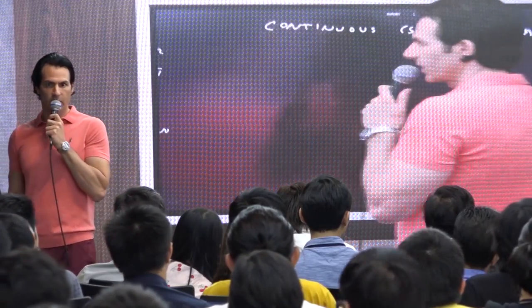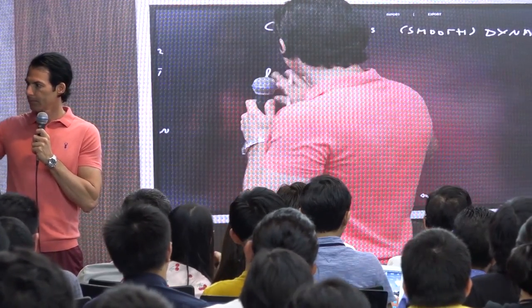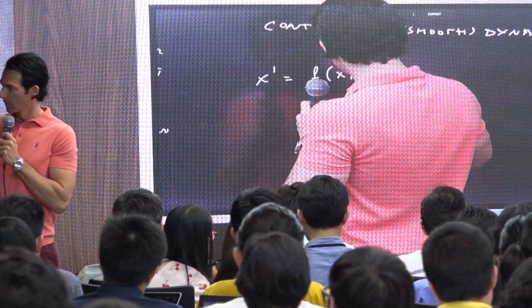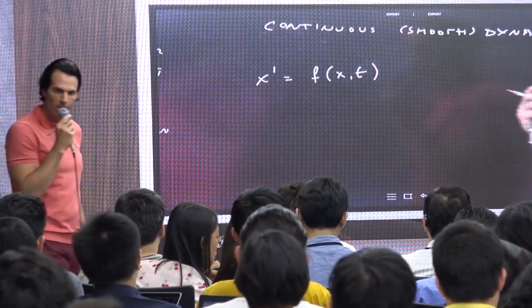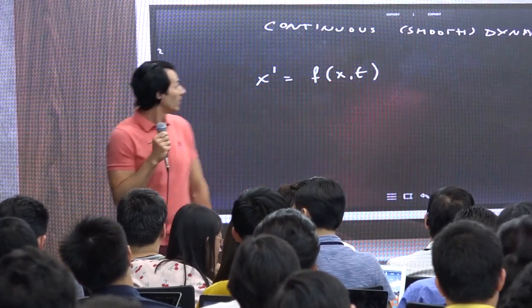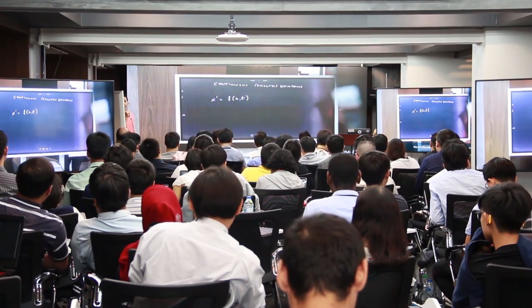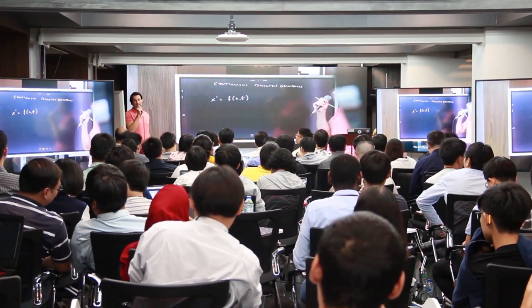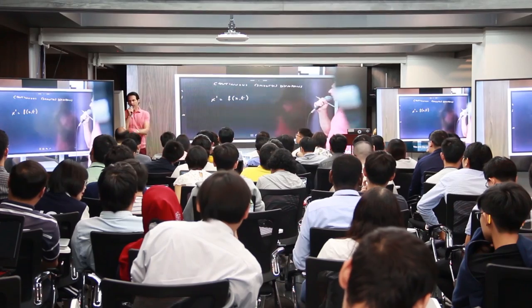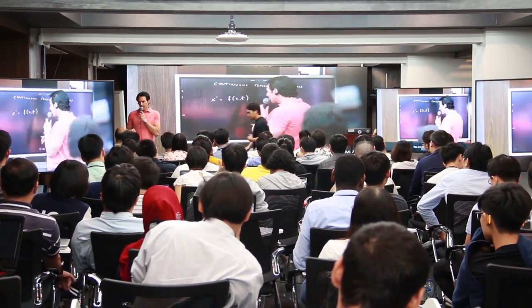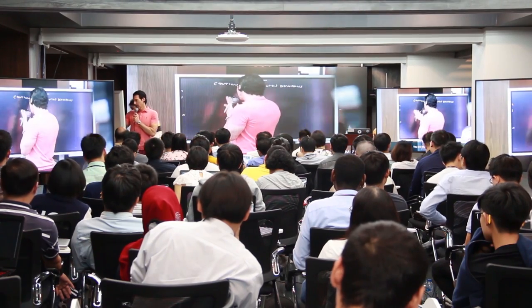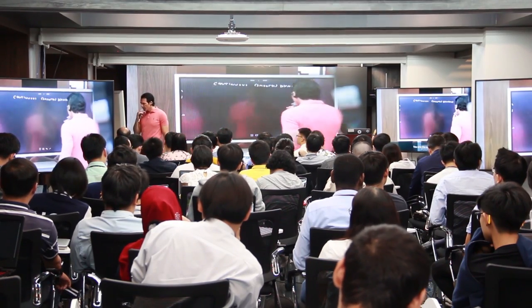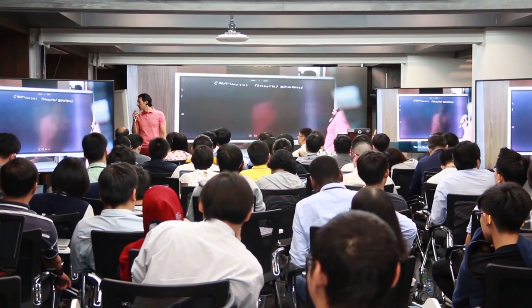A differential equation is an equation of the sort: ẋ = f(x, t). That's a differential equation. A misconception: a differential equation is not just any equation that involves derivatives — it has to be something like this. This looks simple, but it is one of the most important things in mathematics — in the universe, I would say.